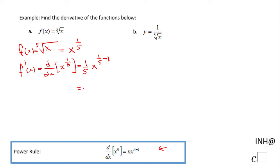So in this case you have 1 over 5 times x to the 1 over 5 minus 1, that is negative 4 over 5. The only thing I'm gonna do here is change it to a positive exponent.